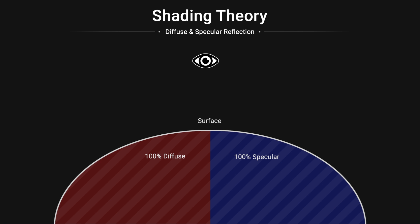When it comes to diffuse and specular reflection, I'm going to explain these ideas using a diagram which looks something like this. On the left-hand side we have 100% diffuse behavior. On the right-hand side is 100% specular reflection behavior. And this surface is just imaginary for the time being. In the middle, we have this eye, and that might represent the eye that we see things from.